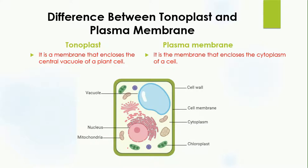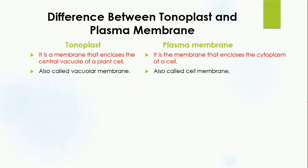In this diagram, here is the vacuole, and the outer layer of this vacuole is the tonoplast, while this part here is the cell membrane which encloses the cell. The tonoplast is also known as vacuolar membrane because it is surrounding the vacuole.